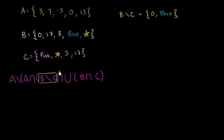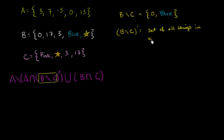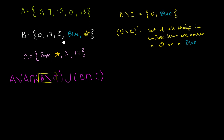Now we're going to take the absolute complement of that. The absolute complement of this business is going to be the set of all things in our universe that are neither a 0 nor a blue. We haven't really defined the universe well — we can already see it contains integers, colors, and stars — so this is all we can really say: the set of all things in the universe that are neither a 0 nor a blue.